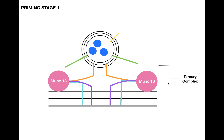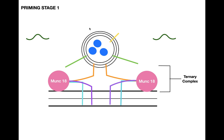The ternary complex is simply a complex of synaptobrevin, SNAP25, syntaxin, and MUNC18 all interacting together. After the ternary complex forms — in what is called priming stage 1 — another cytosolic protein called complexin comes in and binds to the complex.